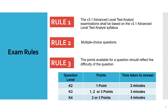Rule three talks about the points available for a question reflecting the difficulty of the question. K2 questions would have one point, K3 questions would have one, two, or three points, and K4 questions would have two or three points. The level of the question would be mentioned in your exam paper. The time taken for reading and answering K2 level questions would be two minutes, K3 level would be three minutes, and K4 level questions would be four minutes.